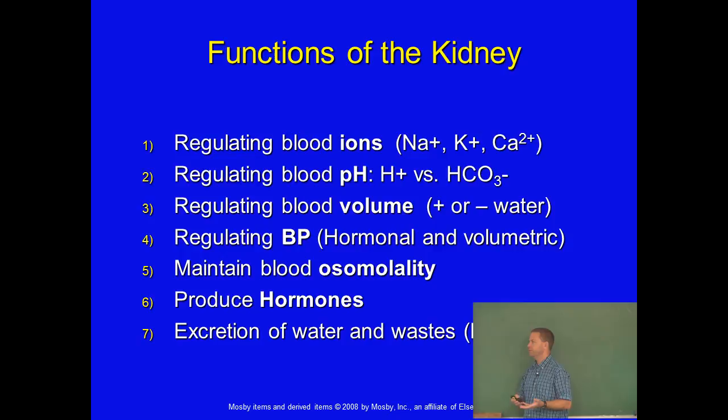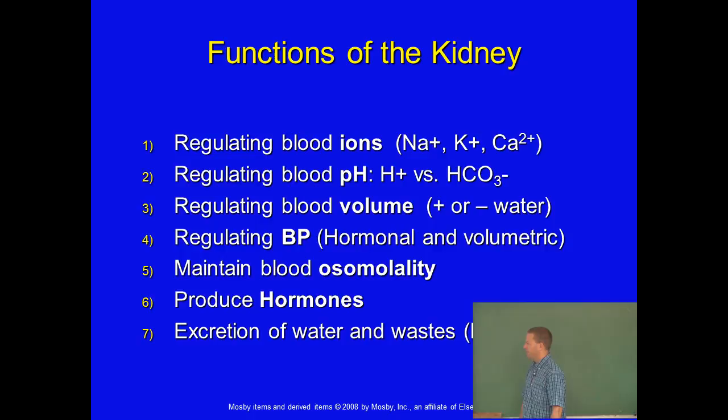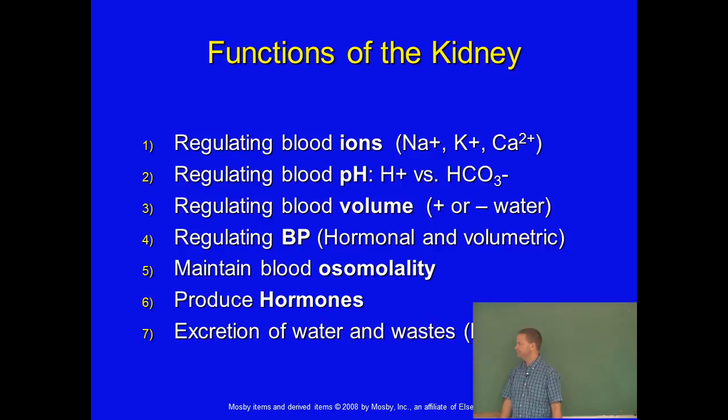By the same token, if an animal is dehydrated and has already had some water loss, the urinary system can help us retain as much water as possible so we don't go into hypovolemic shock. It also helps maintain blood osmolality — the ratio of salts to water. The kidney also produces hormones, for example erythropoietin, which is used for red blood cell production, and of course there's excretion of water and other wastes.